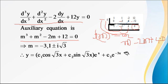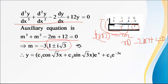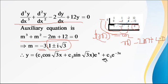After synthetic division, we reduce the power to get the quotient m² − 2m + 4 = 0. Applying the quadratic formula gives m = 1 ± i root 3. So one root is real (m = −3) and two roots are imaginary (1 ± i root 3). For the imaginary roots, alpha = 1 and beta = root 3, giving CF contribution e^x (c1 cos(root 3 x) + c2 sin(root 3 x)). For the real root, we add c3 e^(−3x). The complete CF is y = e^x (c1 cos(root 3 x) + c2 sin(root 3 x)) + c3 e^(−3x).